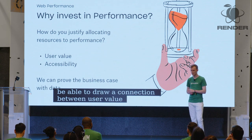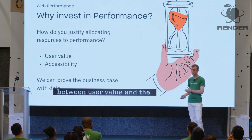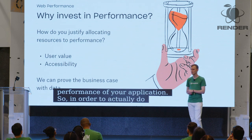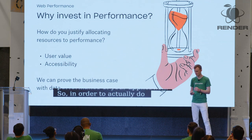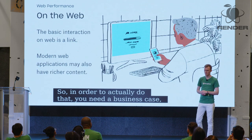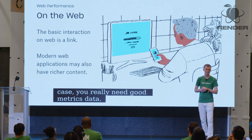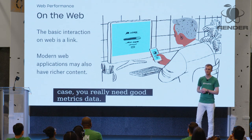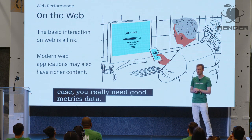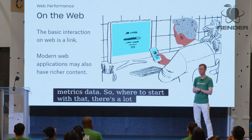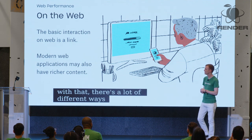In order to do that, you really need to be able to draw a connection between user value and the performance of your application. So in order to actually do that, you need a business case, and in order to make a business case, you really need good metrics data. There are a lot of different ways to think about performance on the web and a lot of different ways to capture data about that.